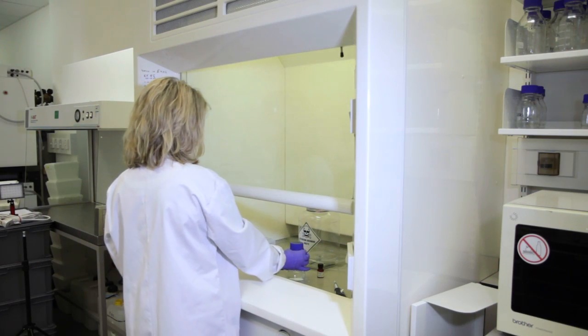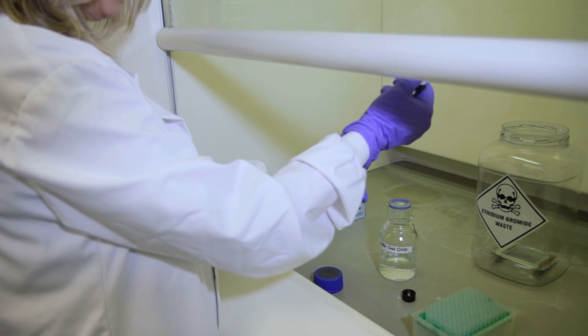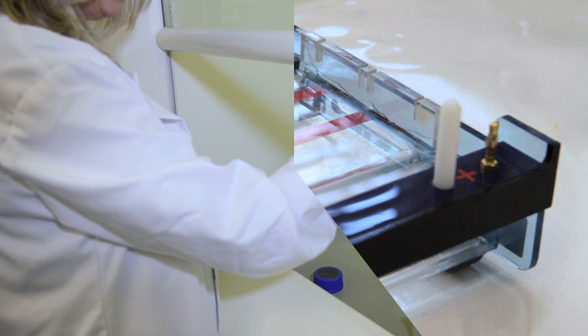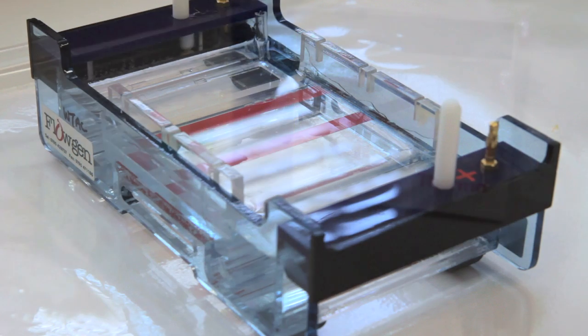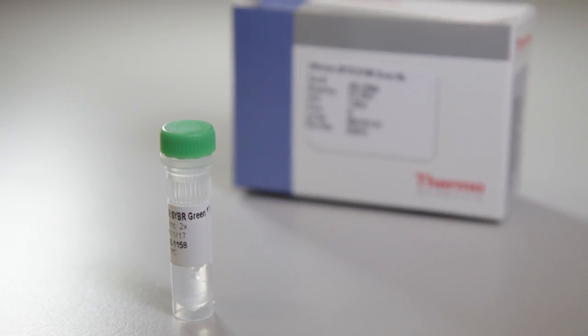To post-stain, add ethidium bromide to running buffer to 0.5 micrograms per ml and stain the gel for half an hour. Today we have used ethidium bromide, but other stains are commonly used including Cyber Green and other intercalators.